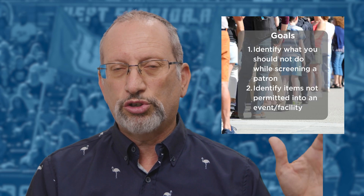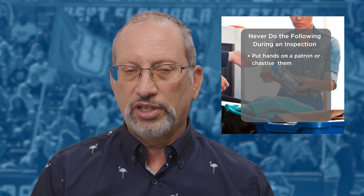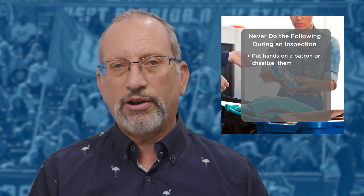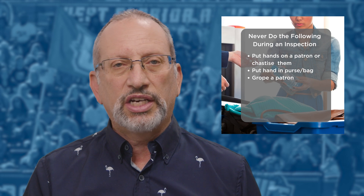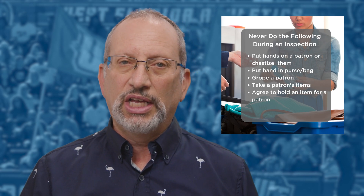The types of inspections include manual, visual, and pat-down. Manual is a hands-on inspection, visual uses only the eyes, and a pat-down is where you physically touch the body. You should never put your hands on patrons unless pat-down searches are being conducted — if it's just a visual inspection, you shouldn't be touching people. You should not order patrons around or chastise them without a valid reason. Never put hands into a purse or bag, never grope a patron, never take a patron's item — ask them to hand it to you. Never agree to hold an item for a patron, and never play with a patron's property.